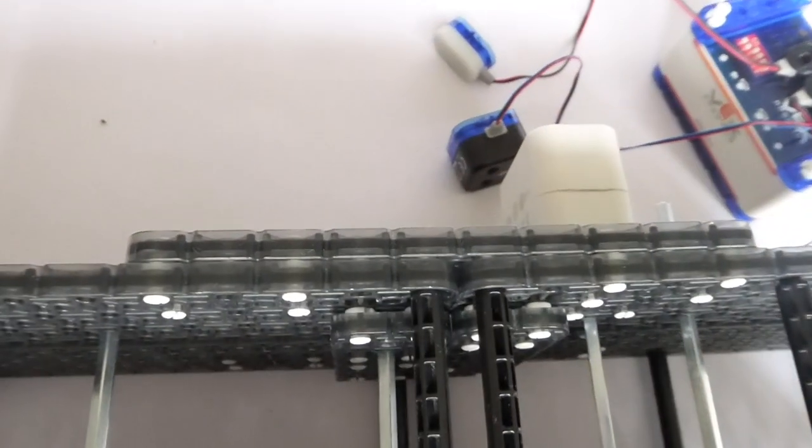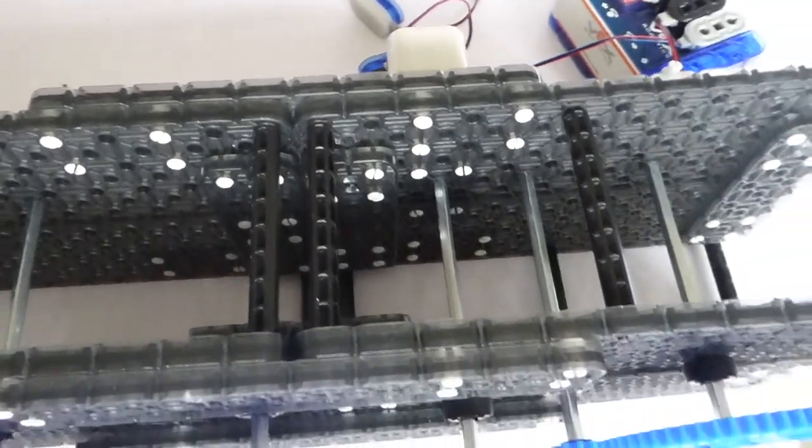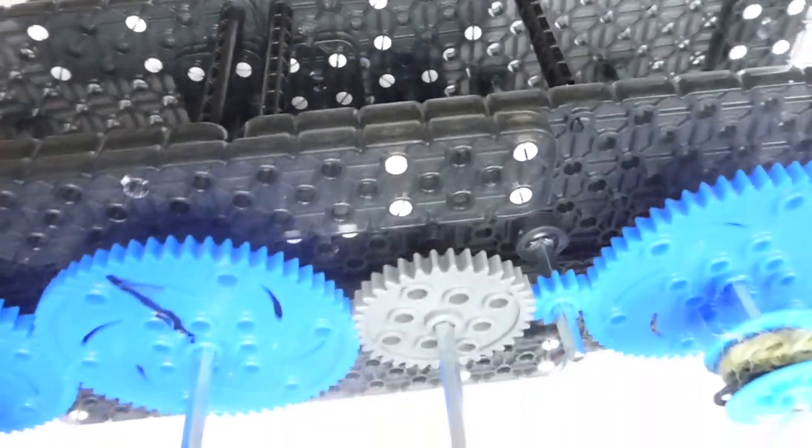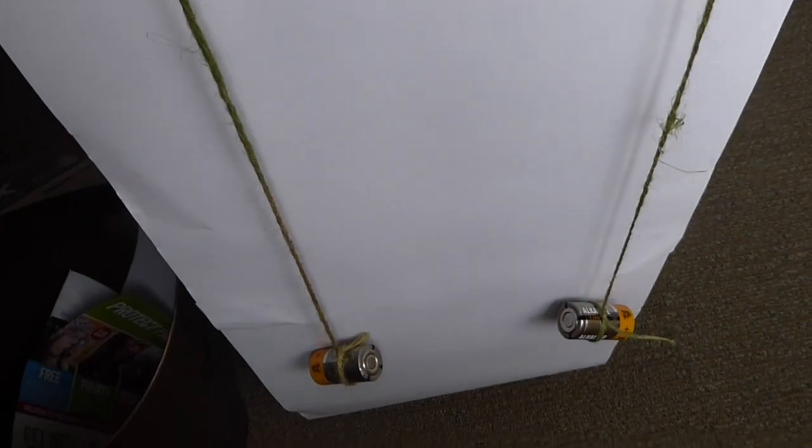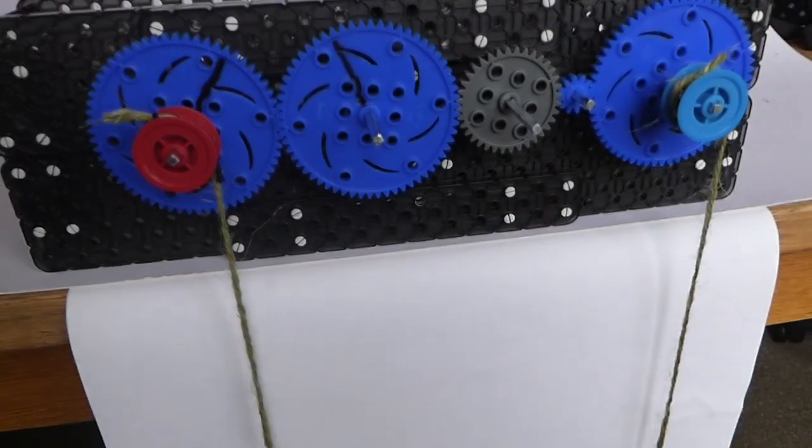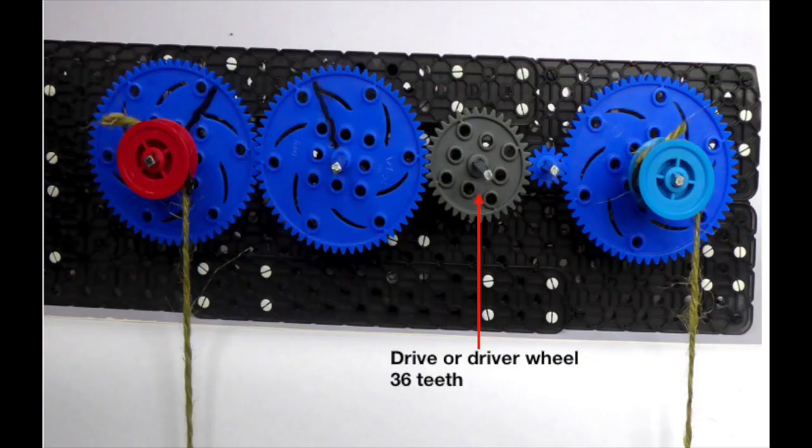In this example the driver wheel is the grey wheel in the centre. It meshes with a small wheel on the right and a large wheel on the left. These two wheels meshing with the driver wheel are called idle or idler wheels. They're not doing any work themselves they're transferring the power to the next one along which in each case is a large wheel.